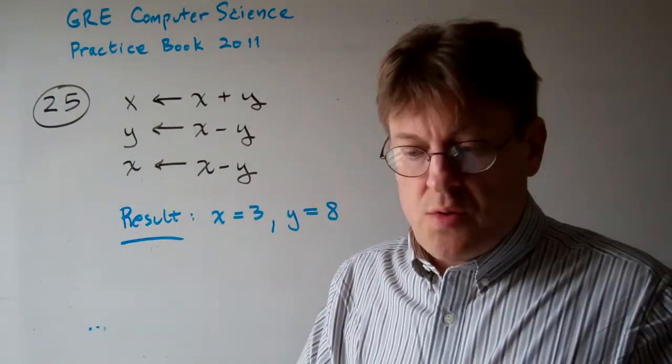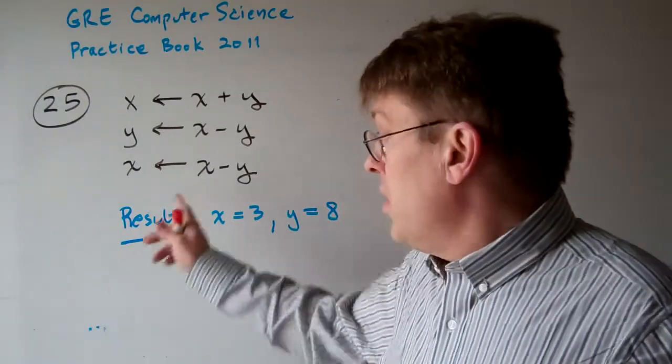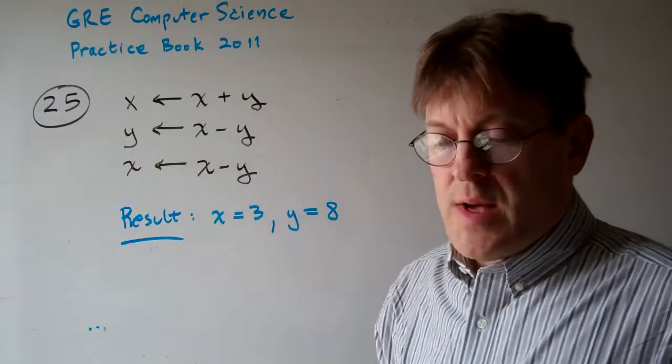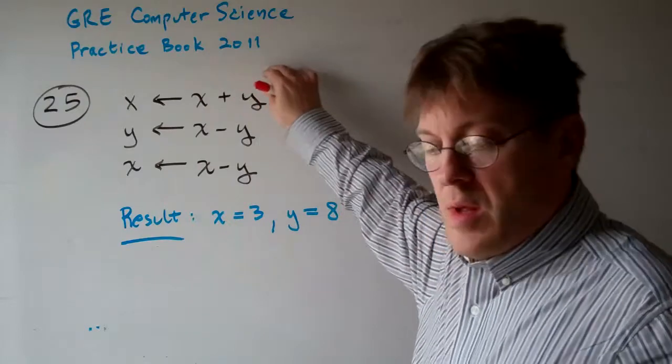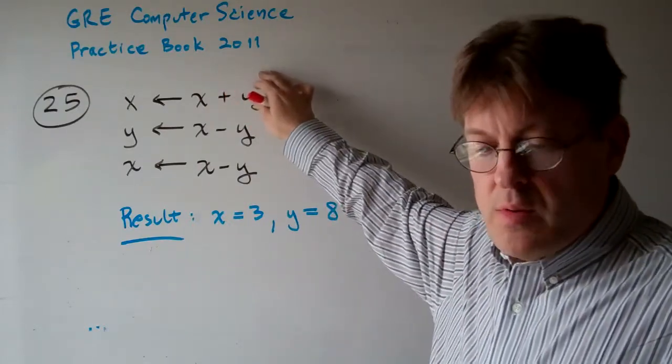Question 25. Consider the pseudocode block below. Assume the variables x and y are integers. We have some precondition, x and y equals something up here but we don't know what.